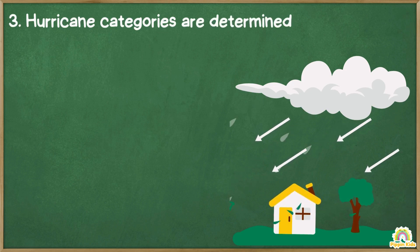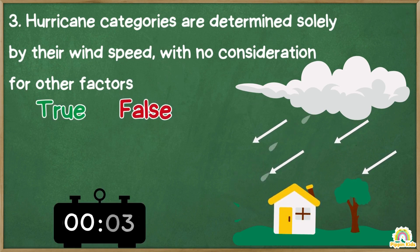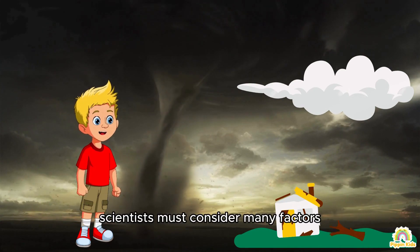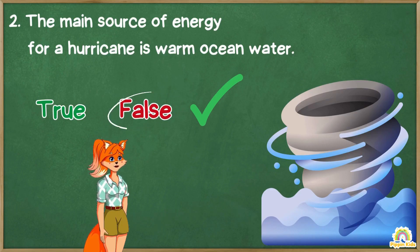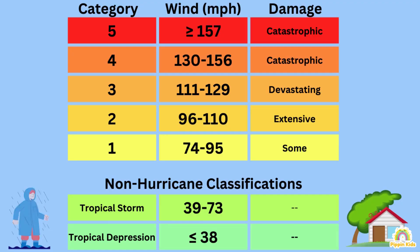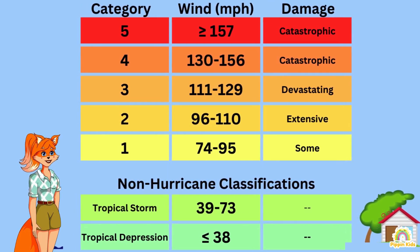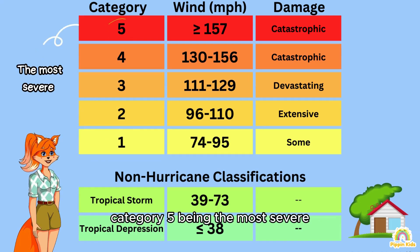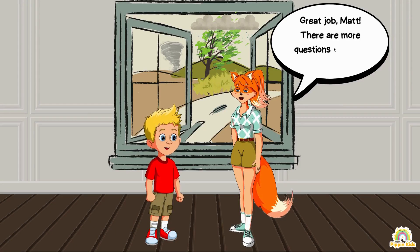Question three: hurricane categories are determined solely by their wind speed, with no consideration for other factors — true or false? With a storm that can cause many major consequences, scientists must consider many factors to determine what a storm is like. False, isn't it? That's absolutely correct! While wind speed is a crucial factor in categorizing hurricanes, the Saffir-Simpson Hurricane Wind Scale also considers potential storm surge and damage. The scale has five categories, with category one being the least severe and category five being the most severe, based on a combination of wind speed and potential impact.